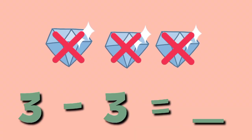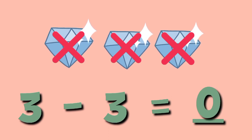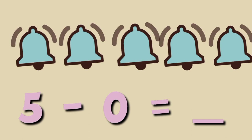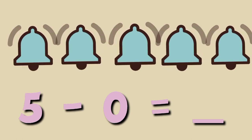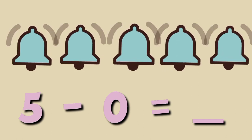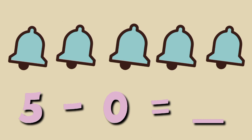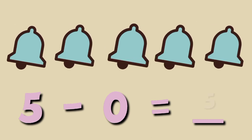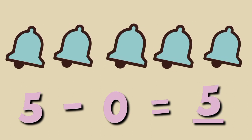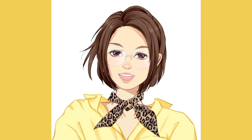Three minus three equals... zero diamonds. Five minus zero equals... five bells. Correct.